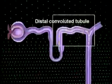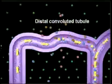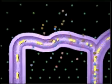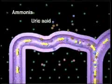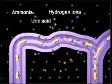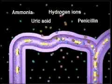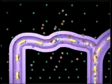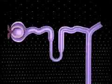In the distal convoluted tubule, secretion occurs. Some wastes — ammonia, uric acid, hydrogen ions, and penicillin — are secreted from blood vessels into the renal tubule.